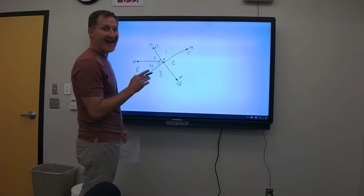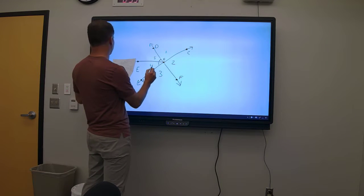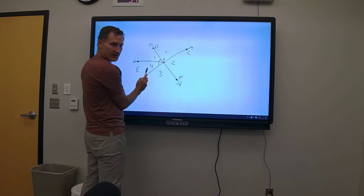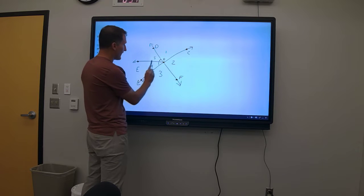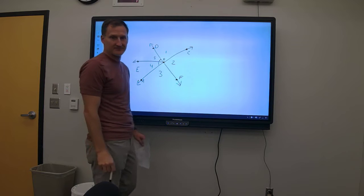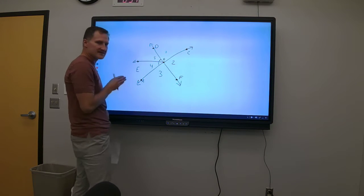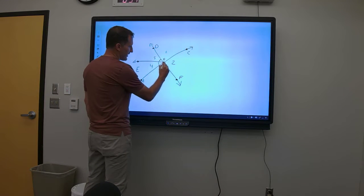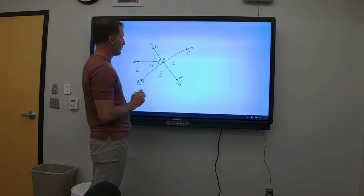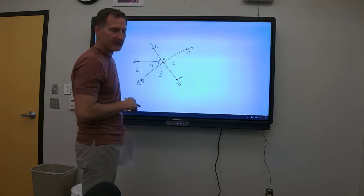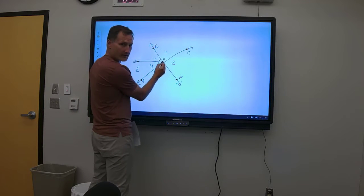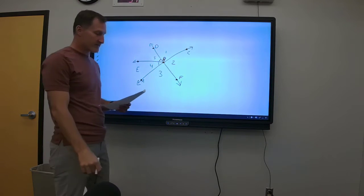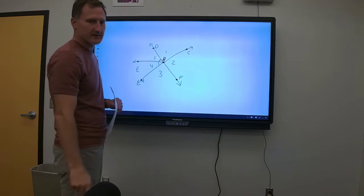So number 1A, the question is: name the vertex for angle 4. Hopefully you can see this well enough, this is angle 4 right here. What is the vertex? Where does that angle come to a point at? It's right here, and on my screen it looks kind of small. I don't know if I can zoom in or something, we'll figure that out later. But the vertex is this point and this point is B. So the vertex of angle 4 is B.